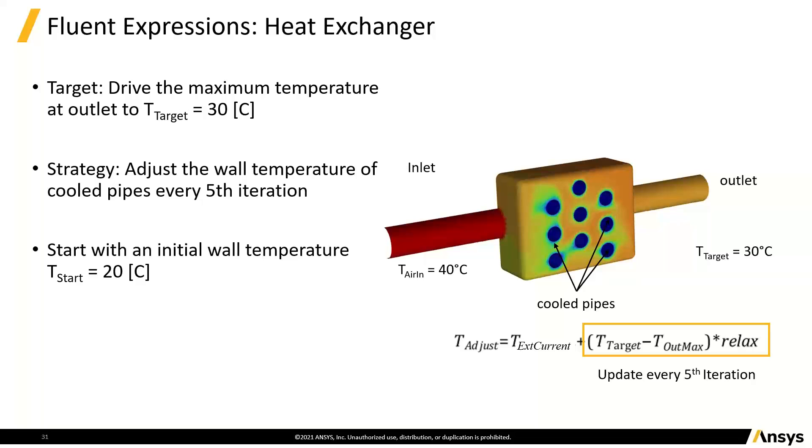We want to drive the maximum temperature at the outlet to be 30 degrees C, and we want to adjust the wall temperature of the cooled pipes.